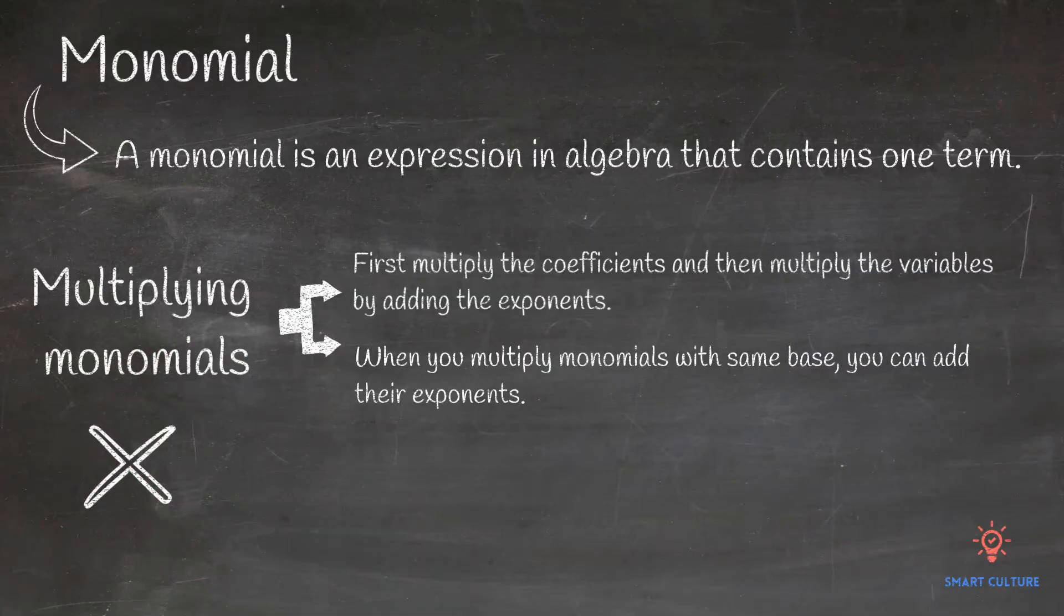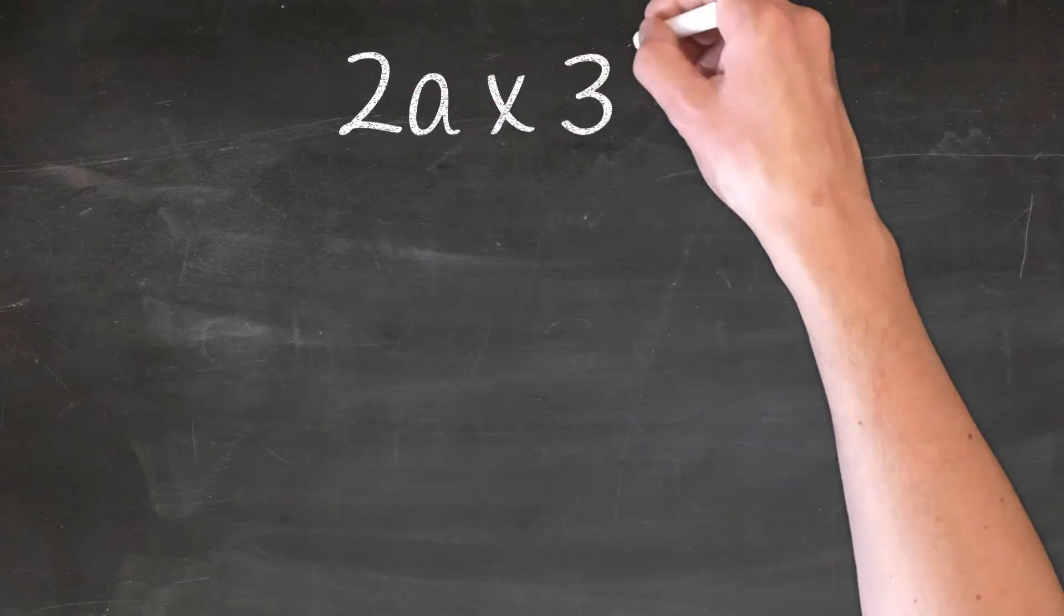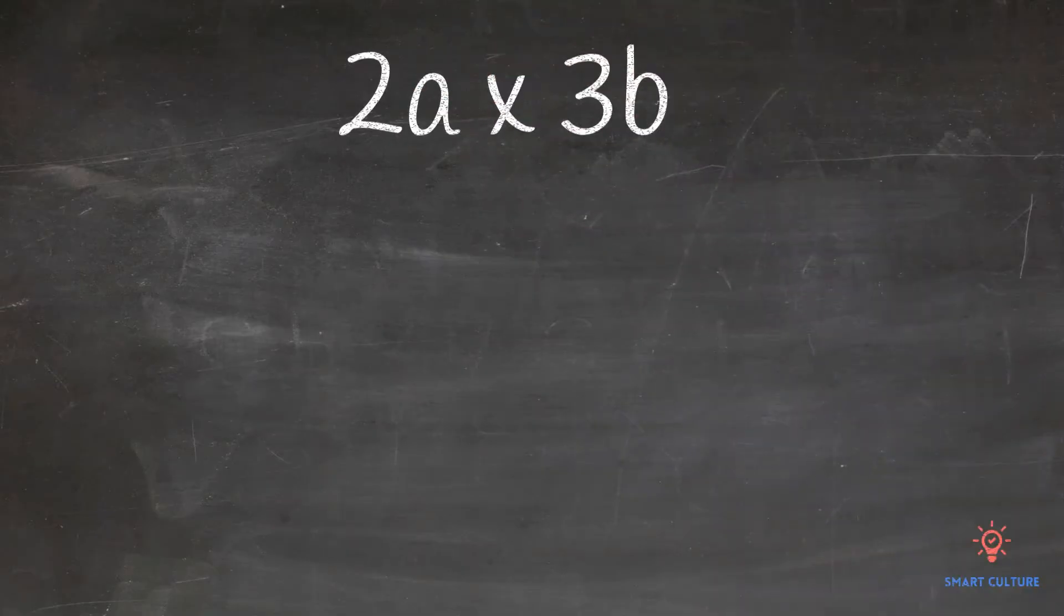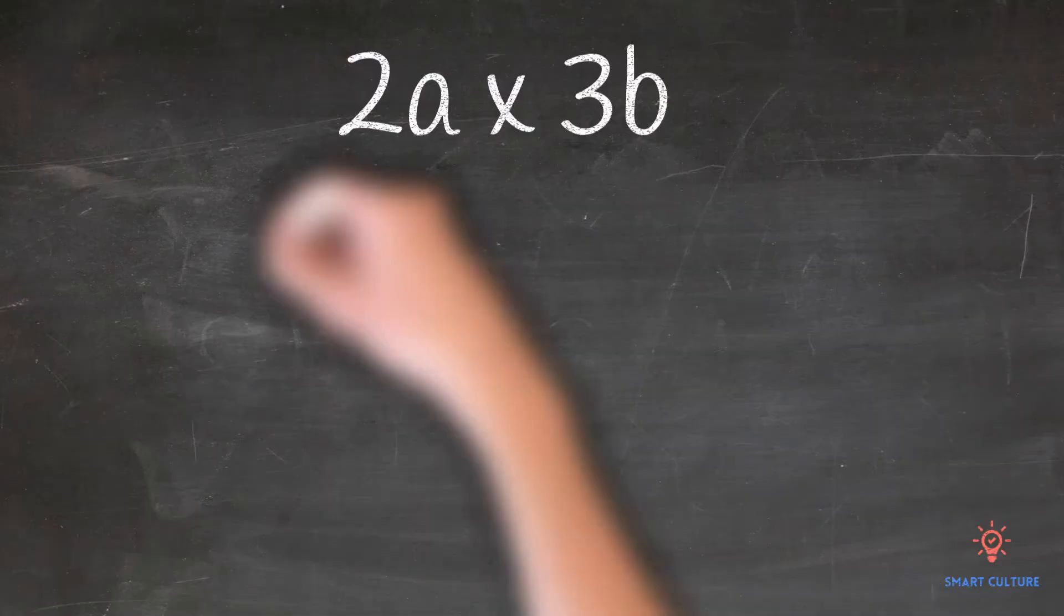Let's take a look at an example. So here we have two monomials, 2a times 3b. So what we'll do first is multiply the coefficients, 2 and 3. We know that 2 times 3 equals 6.